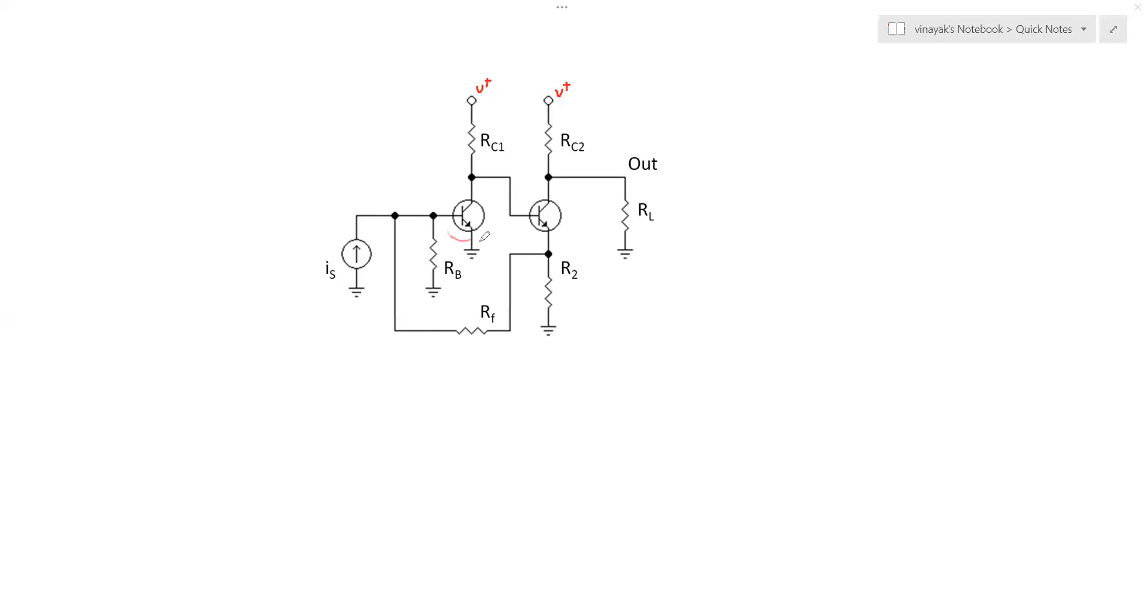So what you see here we have transistor Q1 and from the collector pin you have RC1 and this transistor is acting as current to voltage converter, that is I2V converter. How? So you have an input current IS that is coming here and then you have this current getting split into two parts IB and IRB.